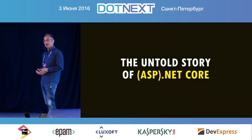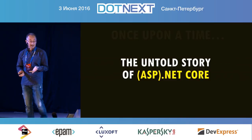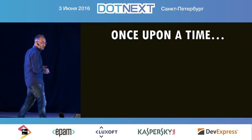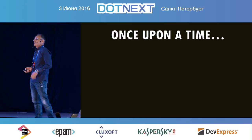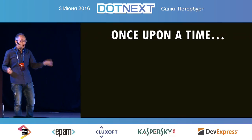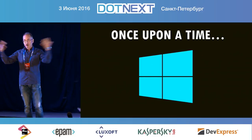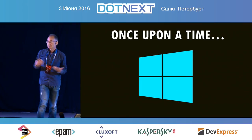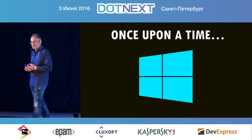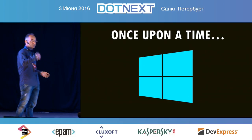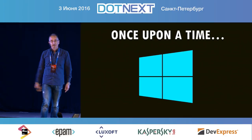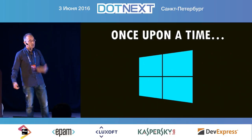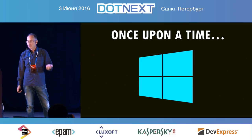Once upon a time — all fairy tales begin like this — a company called Microsoft built a huge amount of money and success around the Windows operating system. At some point, after decades of successful activities, something started changing. The Windows operating system was pushed aside by the real world, and something else appeared from the sky called the cloud — Azure.